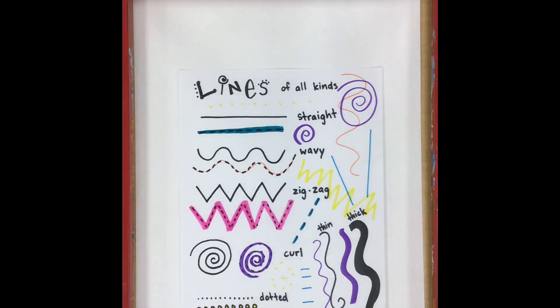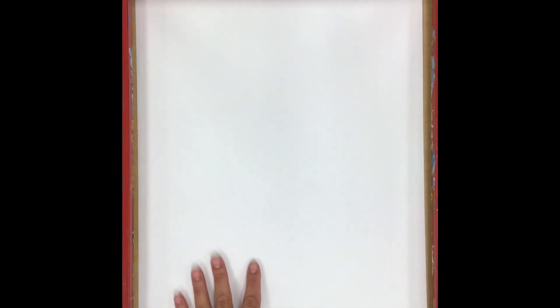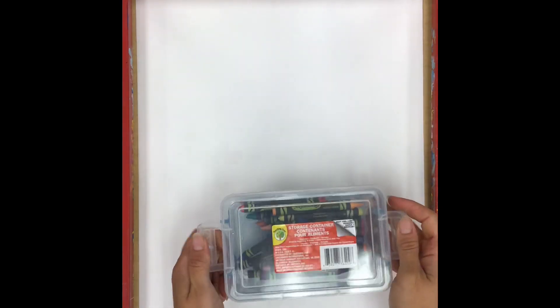Today we're going to be making art with lines. Now after practicing some lines, we're going to get a big white paper and we're going to be using some crayons.